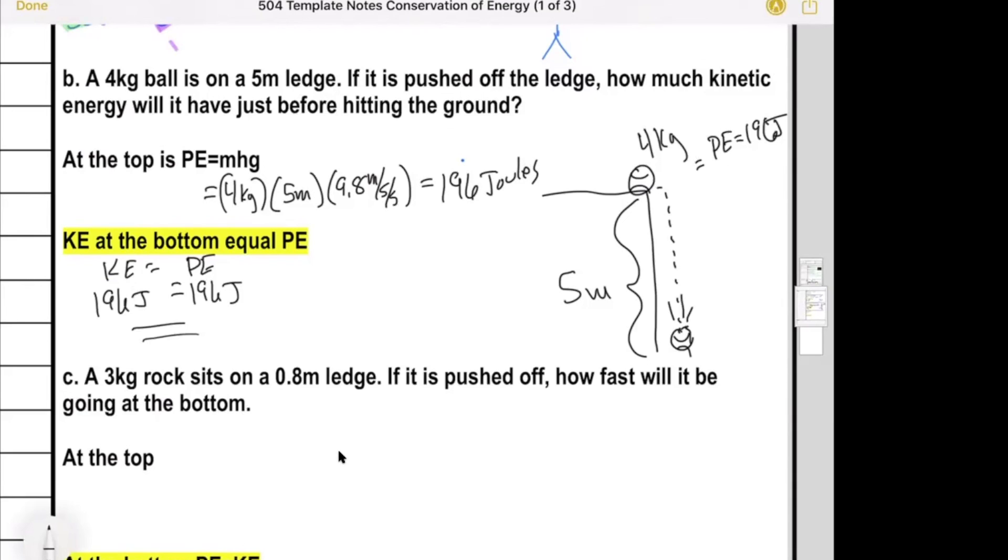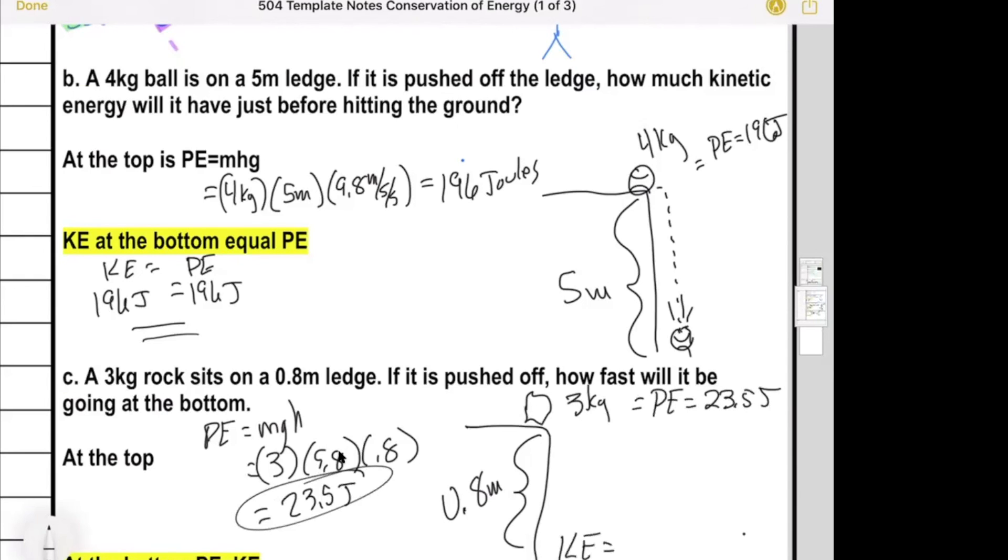I suppose we could do the same thing here. You've got a rock, well for gosh sakes, a three kilogram rock with a height of 0.8 meters. The mass is three kilograms, gravity is 9.8, height is 0.8 meters. Three times 9.8 times 0.8 is 23.5 joules. You know that the KE just before it hits at the bottom has to be the same. That's all I'm getting at. It should match.